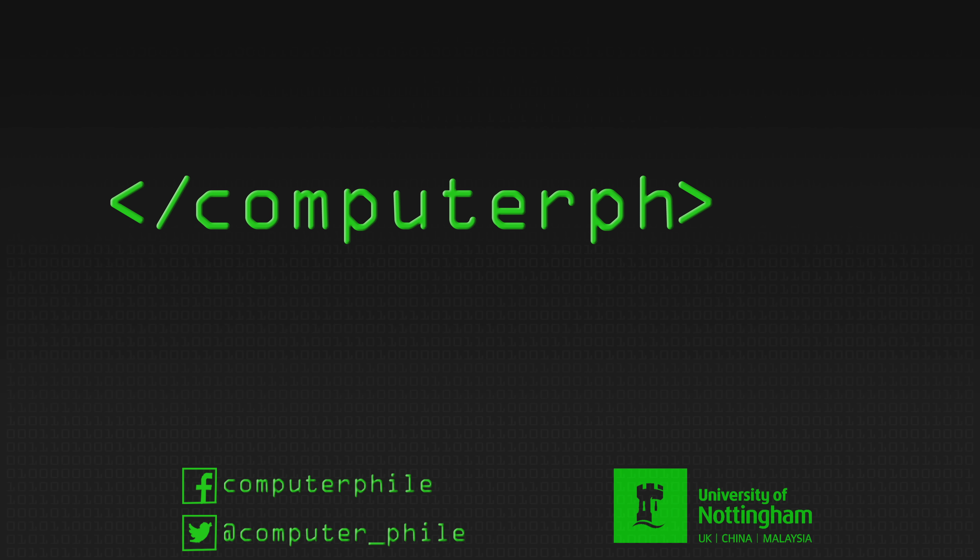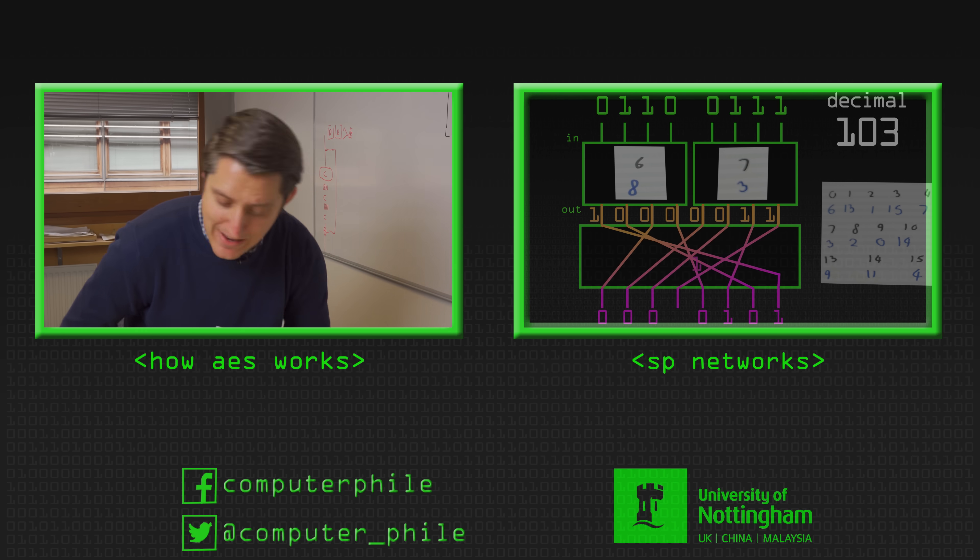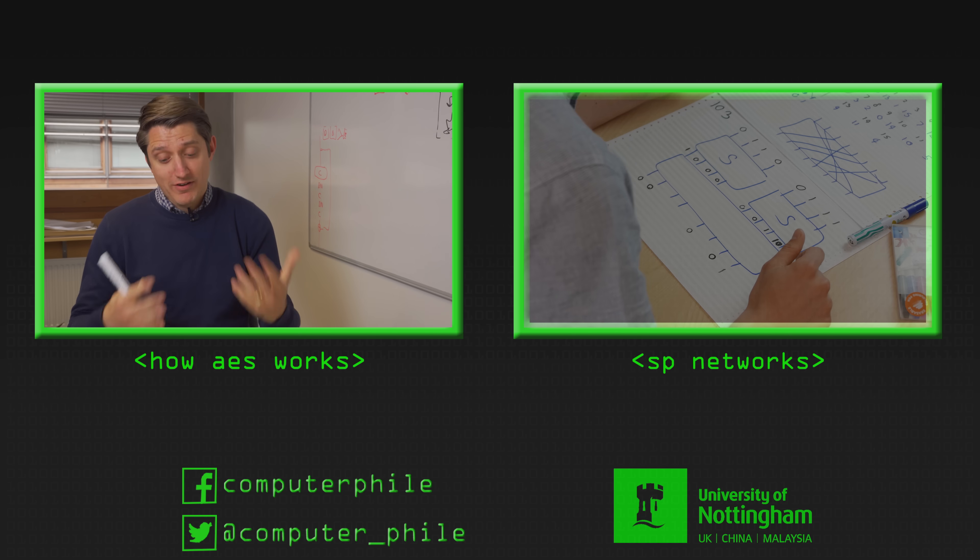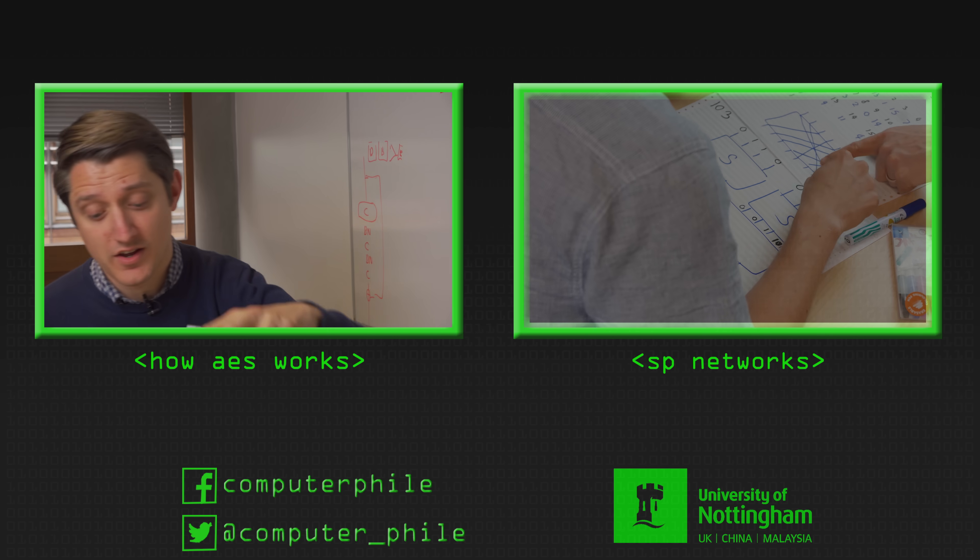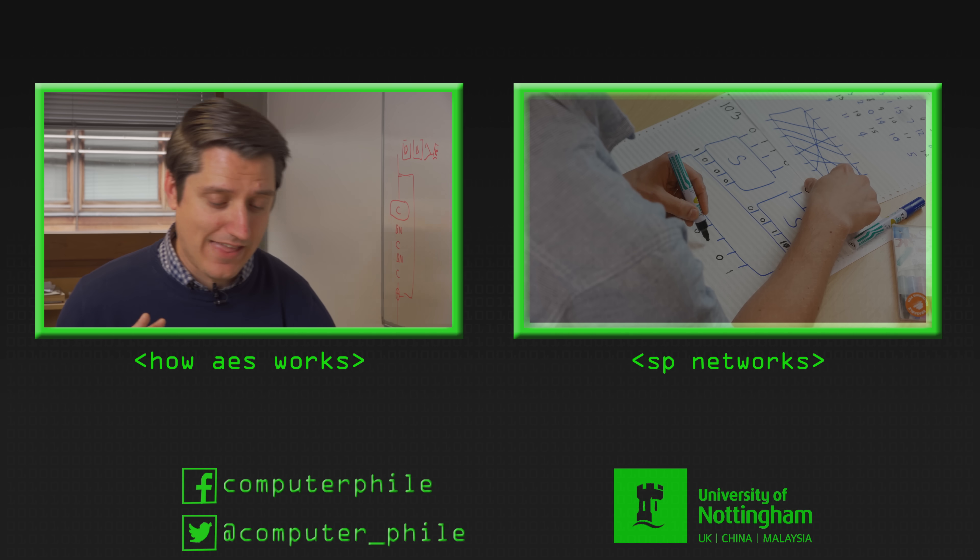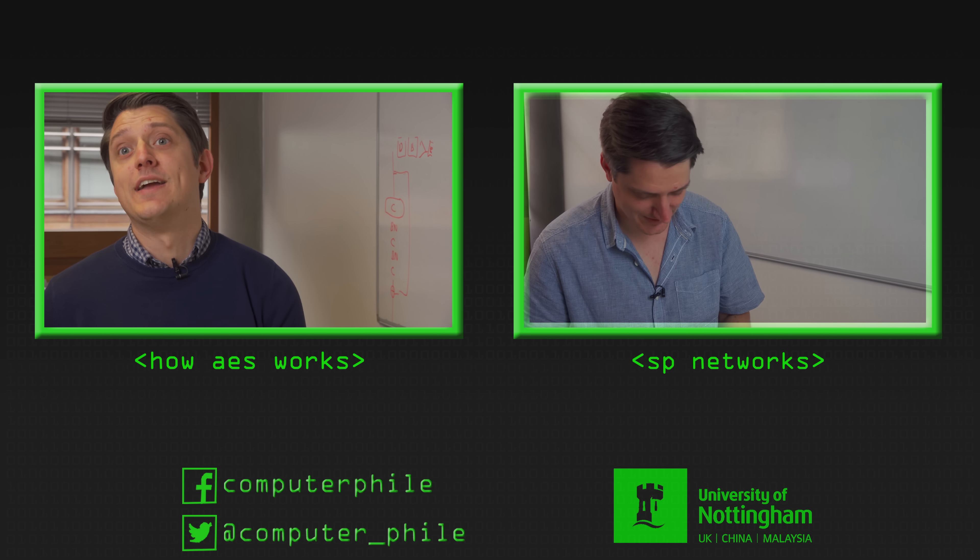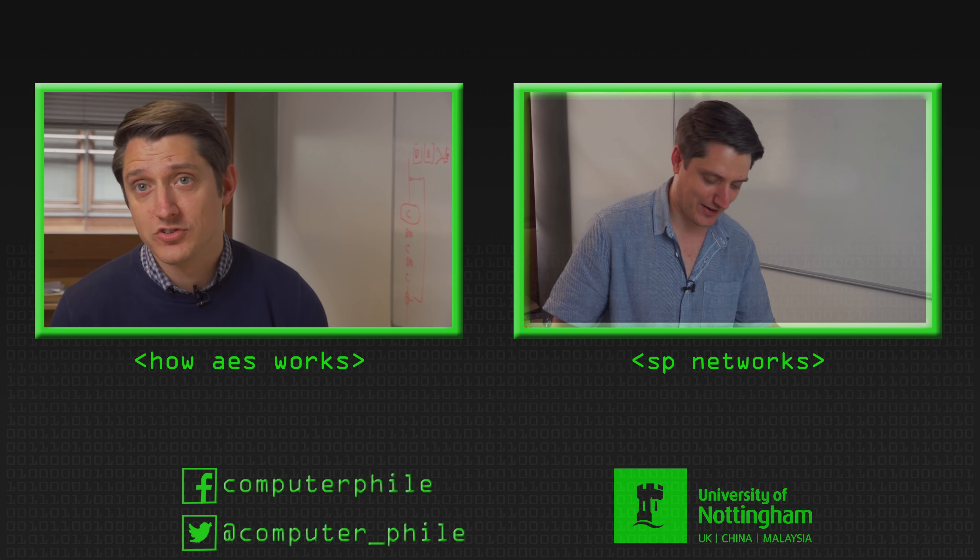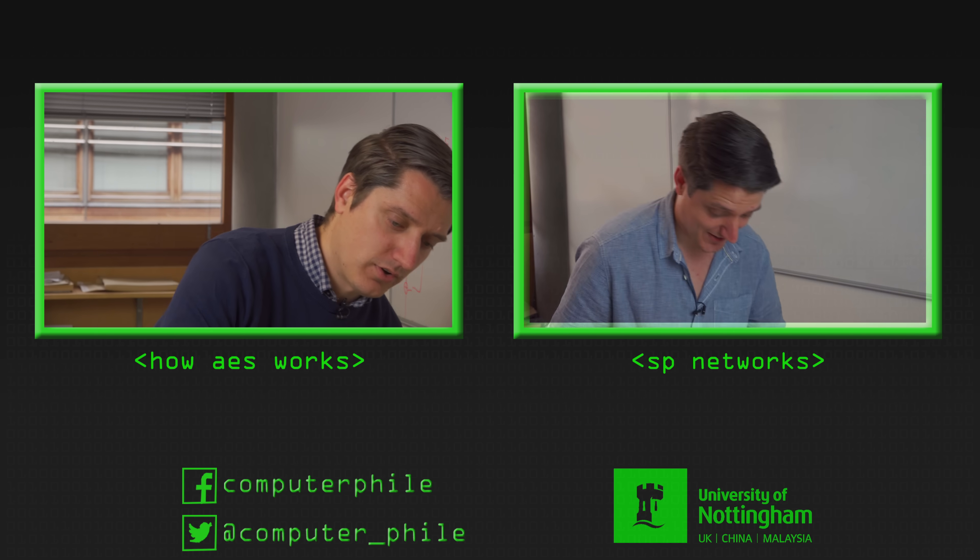We're taking our 128-bit message and we're just laying it out in this order like this. Then we're going to start doing our SP networks. We're going to substitute bytes, and then we're going to transform this into some way where an attacker can't read what the message used to be. So there are a few different...